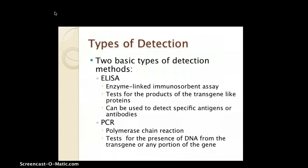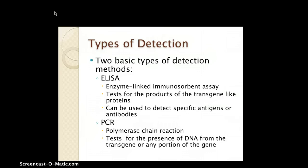So, types of detections. There are two basic types we've been looking at: ELISA and PCR. ELISA stands for Enzyme-Linked Immunosorbent Assay. It tests for the products of transgenes, like proteins, and can be used to detect specific antigens or antibodies. Antigens and antibodies are the key factors used to determine whether a protein is genetically modified or not.